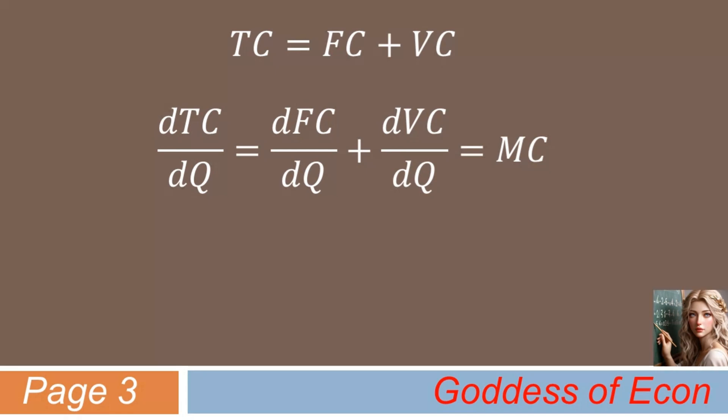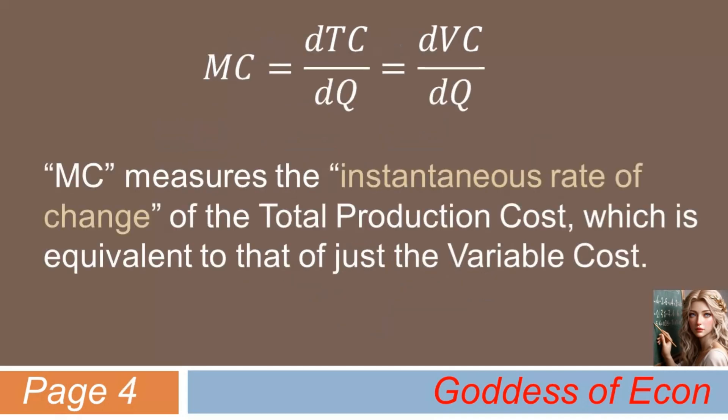And now, if you can recall that the fixed cost part does not depend in any way on the quantity produced, you can see that the derivative of FC with respect to Q simply becomes zero. Therefore, what really matters is only the last term, involving the change in the variable cost. Therefore, we can say that MC measures the instantaneous rate of change of the total production cost, which is equivalent to that of just the variable cost.